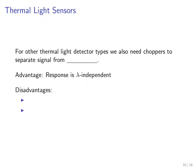For other thermal light detector types such as thermopiles and bolometers, we also need choppers — but for a slightly different reason: not because we won't get any signal from constant exposure, but because we won't be able to separate the signal from ambient temperature. If we have a chopper between the source and the detector, signal components corresponding to the source will have a higher frequency than ambient temperature components, so we can use a high-pass filter to isolate the source signal.